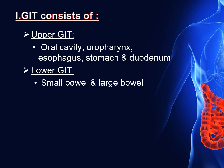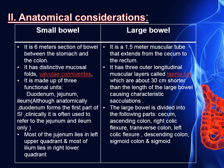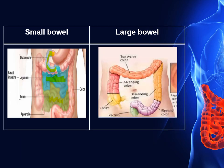We divide the GIT into upper and lower tracts. The upper tract consists of oral cavity, oropharynx, esophagus, stomach, and duodenum, while the lower GIT consists of small bowel and large bowel. The small bowel is a 6-meter section of bowel, beginning at the gastro-duodenal junction and ending at the cecum at the ileocecal junction. It consists of duodenum, jejunum, and ileum. Anatomically, the duodenum is part of the small bowel, but clinically when we mention small bowel, we mean jejunum and ileum.